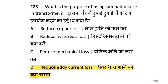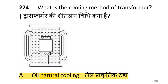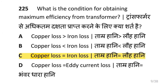What is the purpose of using a laminated core in a transformer? That is to reduce the eddy current loss. The silicon steel core is used in a transformer for laminations to reduce the eddy current loss. What is the cooling method of a transformer? Oil natural cooling.